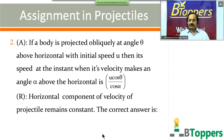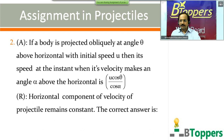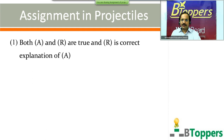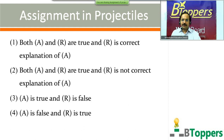The multiple choice options are the same as for the previous question. Mark option 1 if A and R are both true and R is the correct explanation of A; mark option 2 if A and R are both true but R is not the correct explanation of A; mark option 3 if A is true and R is false; mark option 4 if A is false and R is true.